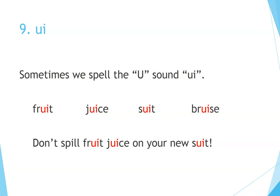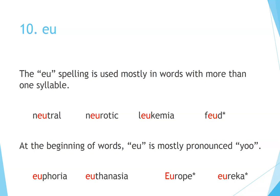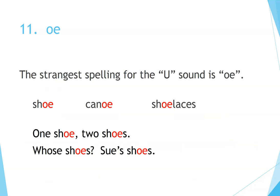Don't spill fruit juice on your new suit. Number 10: EU. The EU spelling is mostly in words with more than one syllable: neutral, neurotic, leukemia, feud. At the beginning of words, EU is mostly pronounced U: euphoria, euthanasia, Europe, Eureka. Number 11: OE. The strangest spelling for the OO sound is OE: shoe, canoe, shoelaces. One shoe, two shoes, whose shoes? Su's shoes.